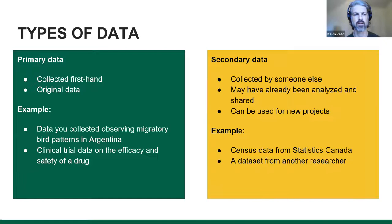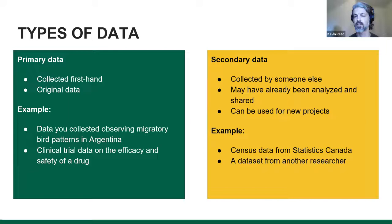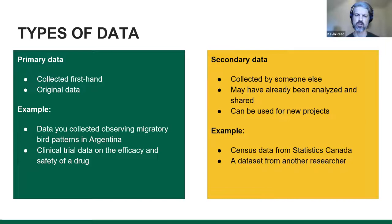We can also think about data in terms of primary and secondary. Primary data is original data collected firsthand — that might be data collected observing migratory bird patterns in Argentina, or clinical trial data on the efficacy and safety of a drug. Secondary data is collected by someone else, already collected and possibly analyzed and shared, and can be reused for new projects — such as census data from Statistics Canada or a dataset published by another researcher.